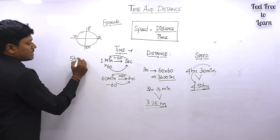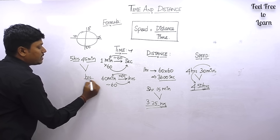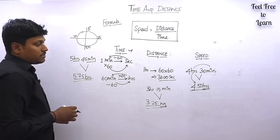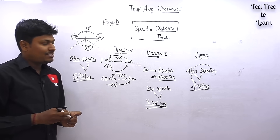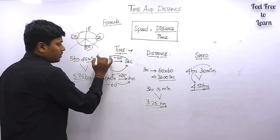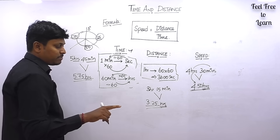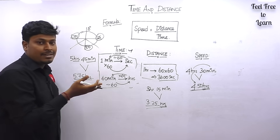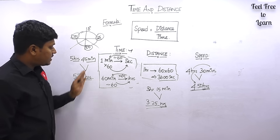For 5 hours 45 minutes, since 45 minutes is 0.75, the answer is 5.75 hours. In questions you will mostly see 25, 50, and 75 — those three are more than enough. To summarize time conversions: minutes to seconds multiply by 60, seconds to minutes divide by 60, minutes to hours divide by 60, hours to minutes multiply by 60, and hours and minutes combined into decimal hours using the 25/50/75 pattern.